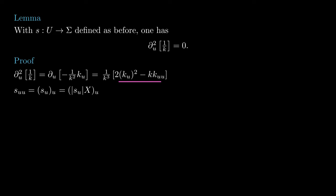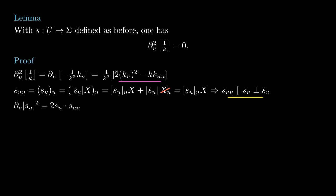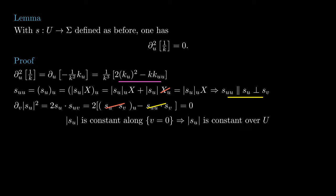Before we do that, we first need to show that suu is zero. From the product rule and the fact that x doesn't depend on u, we get that suu is a multiple of x. In particular, it is perpendicular to sv. We then differentiate the norm of su squared with respect to v. This equals twice suv dot su, which also equals twice the derivative of sv dot su with respect to u minus sv dot suu. We just proved that the second term is zero, and the first term is zero because the eigenspaces of the shape operator are orthogonal. This shows that the length of su doesn't depend on v. Remember that by construction, the length of su was also constant along the axis v equals zero, so the length of su is constant along the entire chart. By differentiating this with respect to u, we conclude that the dot product between suu and su is zero. Since suu was a multiple of su, this shows that suu is zero.